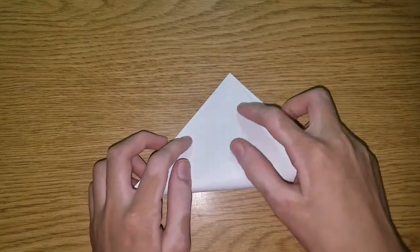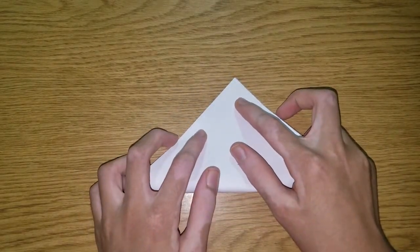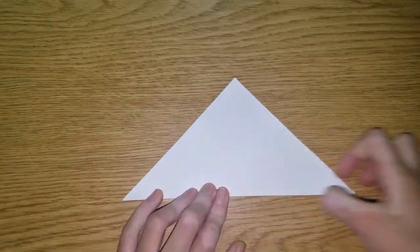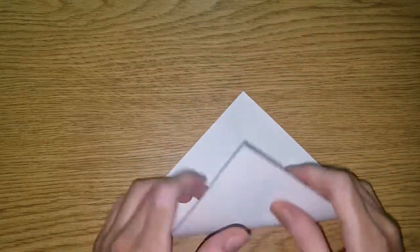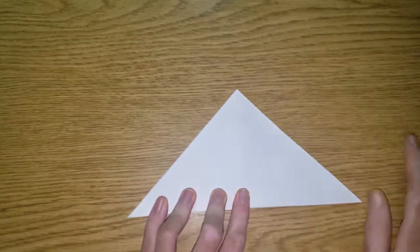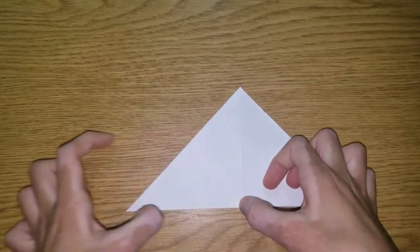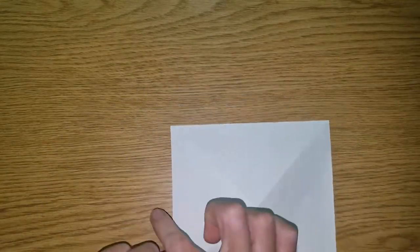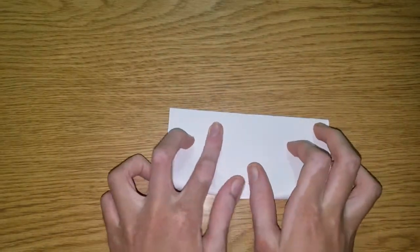So the first step is to fold the diagonals. And we're going to make a water bomb base. So fold these creases too, so fold them in half.